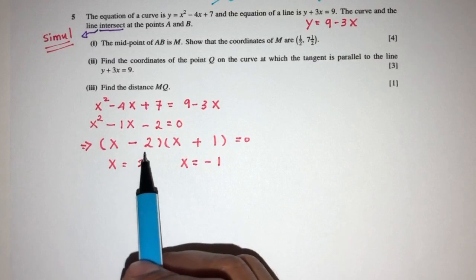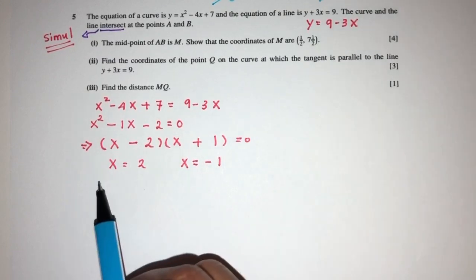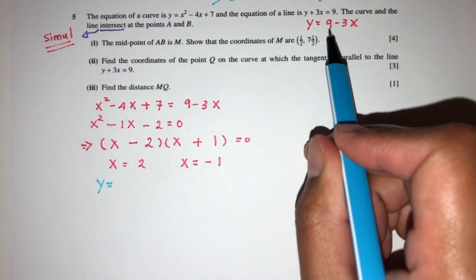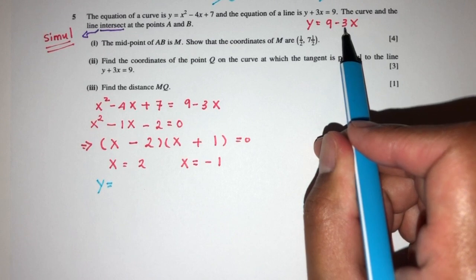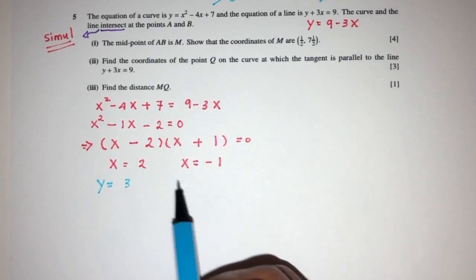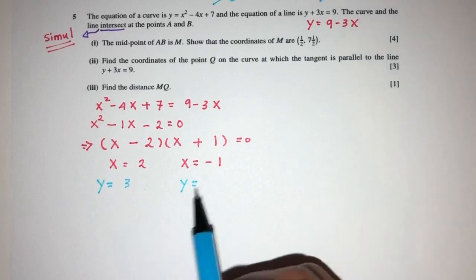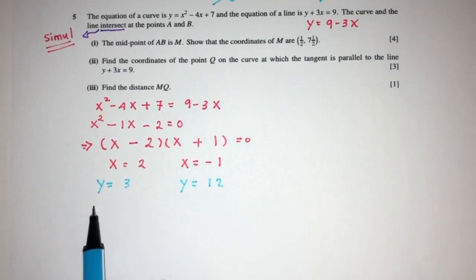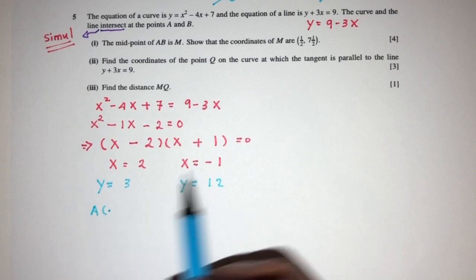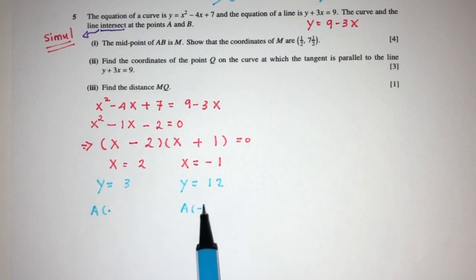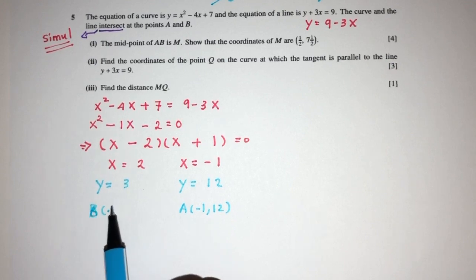Now for x equal to 2, what is the value of y? y will be 9 minus 3 times 2 is 6, so 9 minus 6 will be 3. And for x = -1, y will be 9 minus 3 times -1, so 9 plus 3 equals 12. So point A will be (-1, 12) and point B is (2, 3).